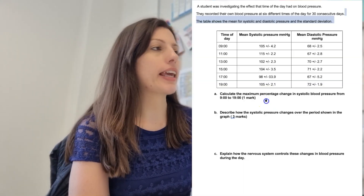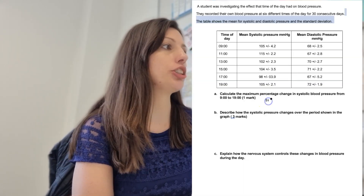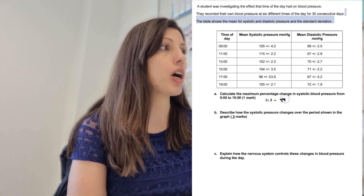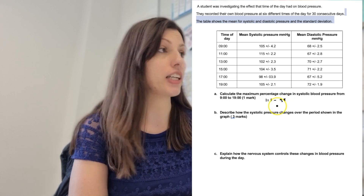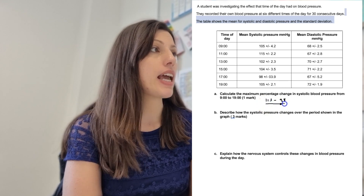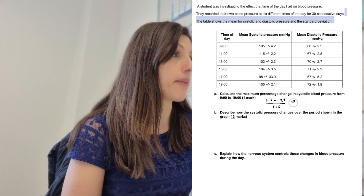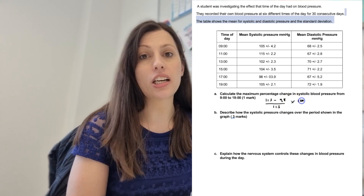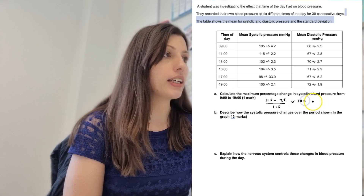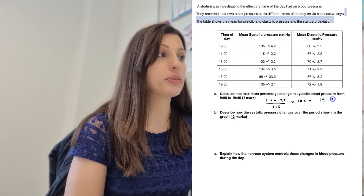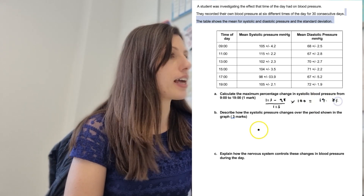Let me show you how you would approach these questions. For the first one: calculate the maximum percentage change in the systolic blood pressure from 9am to 7pm. The first thing we need to do is work out the raw change between the two biggest differences — that was 115 at 11am and 98 at 5pm — then divide that by the original value of 115. That gives us a difference of 17, divide by 115 and times by 100 because it's a percentage, giving us 14.8%.